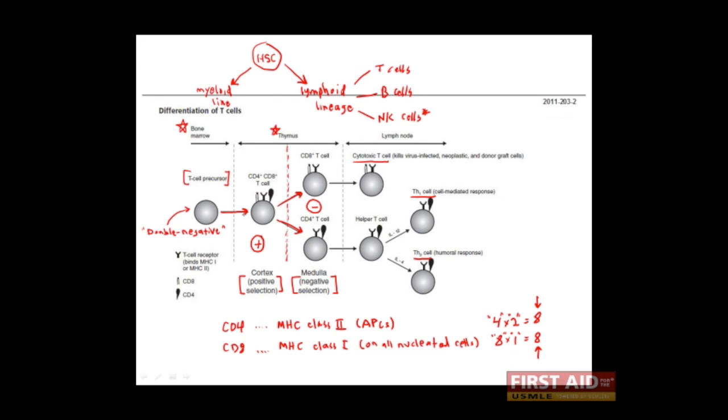So again, in positive selection, we want to make sure that our T cells can recognize MHC molecules in the first place. Thus, we're looking for a positive response. In the next stage, in the medulla, we want to make sure that these T cells do not respond to self-peptides. Thus here, we are looking for a negative response, which is why it's called negative selection.